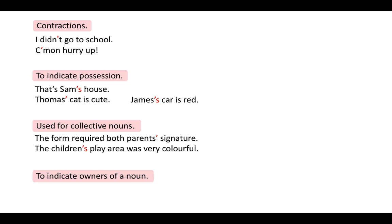Brackets come in pairs and are used to add extra information to a sentence. This extra information can be a word, a phrase or even an entire sentence. There are two types of brackets. The first type is parentheses, which are generally used to add extra information. For example: 'Philip studied (all day) for the grammar test.' and 'I went to the museum with Becky (my best friend).' The sentence should still make sense if the bracket element is removed — for example, 'Philip studied for the grammar test' and 'I went to the museum with Becky' both still make sense.